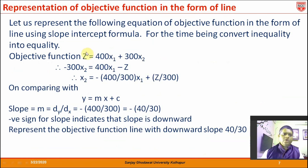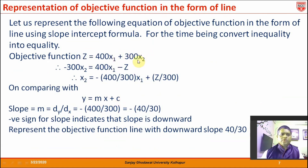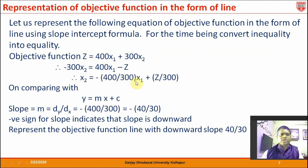Similarly, we now convert the objective function into the form of a line using the slope-intercept formula y = mx + c. The given objective function equation is rearranged so that x₂ is expressed as: x₂ = −(400/300)x₁ + Z/300. This converts the objective function into slope-intercept form on the same graph paper.